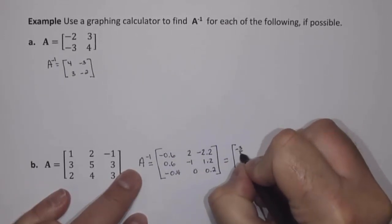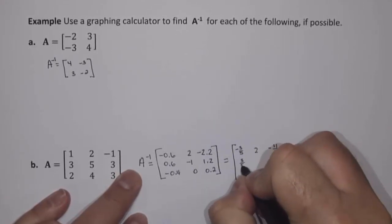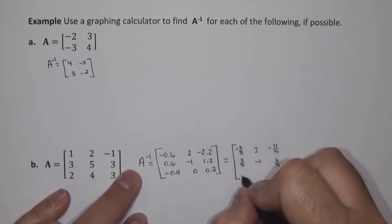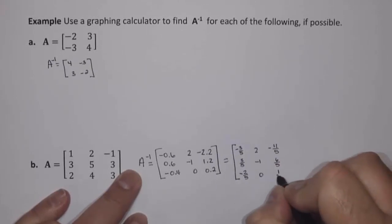again, negative 3 fifths, 2, negative 11 fifths, 3 fifths, negative 1, 6 fifths, negative 2 fifths, 0, 1 fifth.